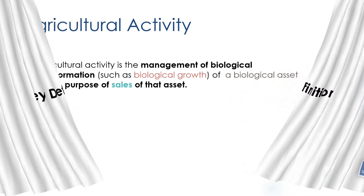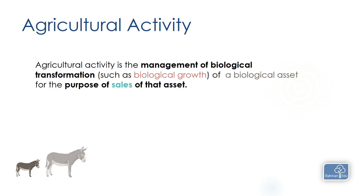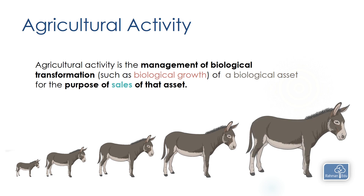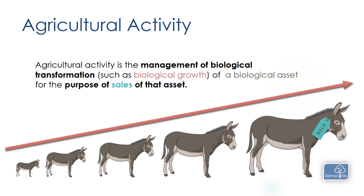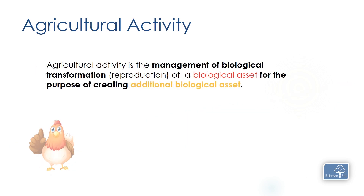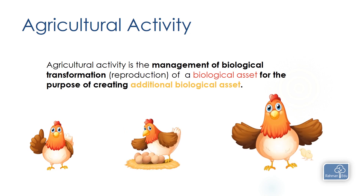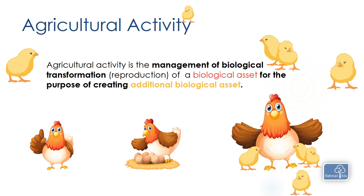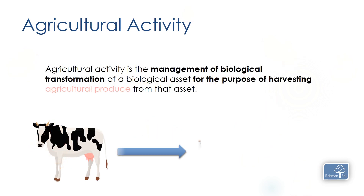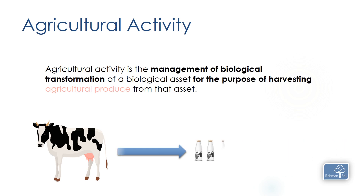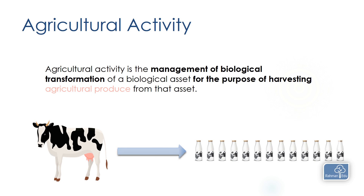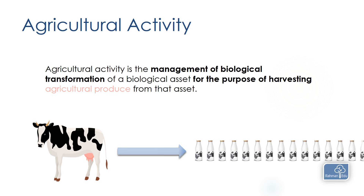First, let's talk about some of the key definitions. We need to know what is agricultural activity. Agricultural activity is the management of biological transformation of a biological asset for the purpose of sale of that asset, or for the purpose of creating additional biological assets, or for the purpose of harvesting agricultural produce from that asset.